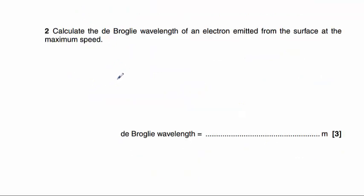Part two asks us to calculate the de Broglie wavelength of an electron emitted from the surface at the maximum speed. Now we know that the maximum speed here given to us in the previous question is 5.0 approximately times 10 to the power of 5 metres per second. And the equation for de Broglie wavelength is lambda equals h over mv,